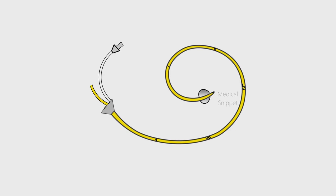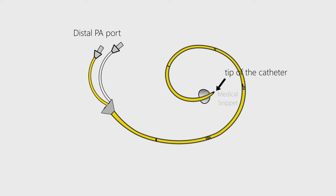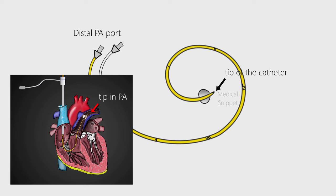The second is the distal pulmonary artery port; its lumen terminates at the tip of the catheter. So when in position, this port is used to measure pulmonary artery pressure and mixed venous saturation.